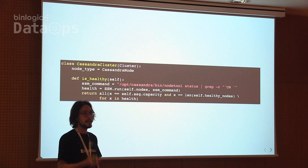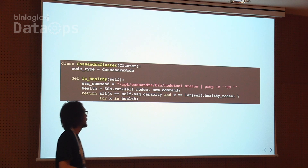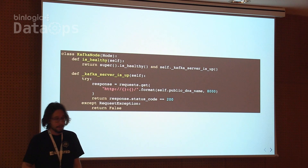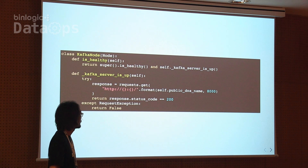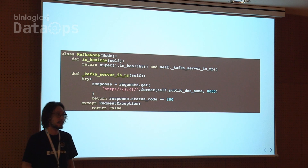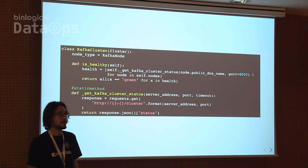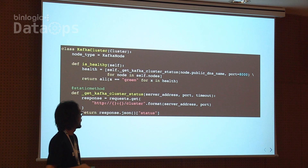If I have a desired capacity of six nodes, then all six nodes must report that six nodes are up and running and normal before we proceed with the rollout. For Kafka we do it a bit differently — we query an HTTP endpoint on the server, and if it responds correctly the node is healthy. For the cluster, we ask for health information from the HTTP endpoint, and if all nodes agree that the status is green, the cluster is healthy.